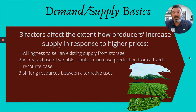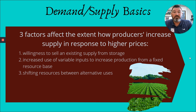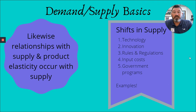Three factors affect the extent to which producers increase supply: willingness to sell at an existing supply from storage, increased use of variable inputs, and shifting resources between alternative uses. You can choose to plant corn or soybeans — market forces are going to oftentimes move you one direction or the other, and if neither one is any good, you're potentially going to look at something completely different to plant. Likewise, relationships exist — what we call elasticity — that occurs with supply. Things that shift the supply curve include technology, innovation, regulation, input costs, and occasionally government programs in terms of what we choose to put in the ground or supply in the animal market.